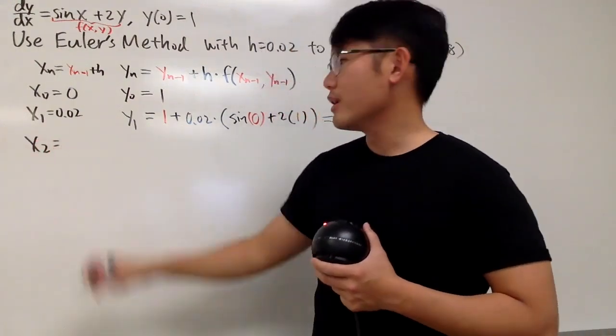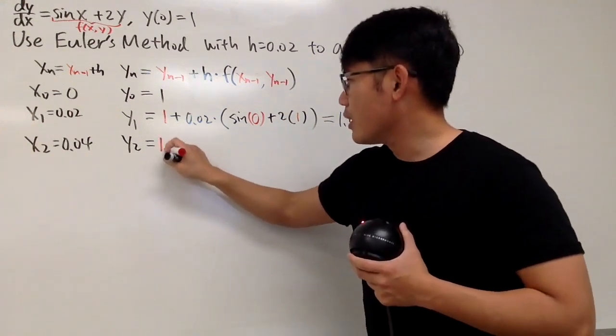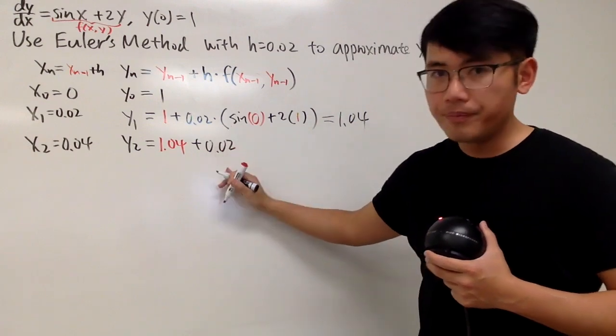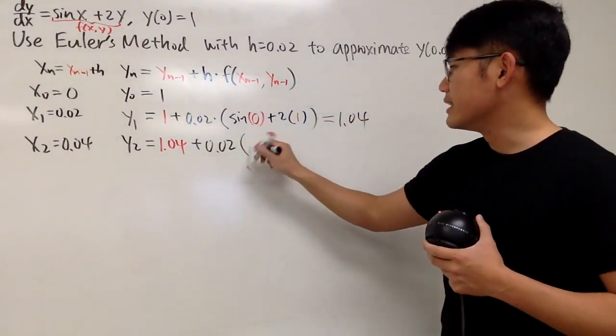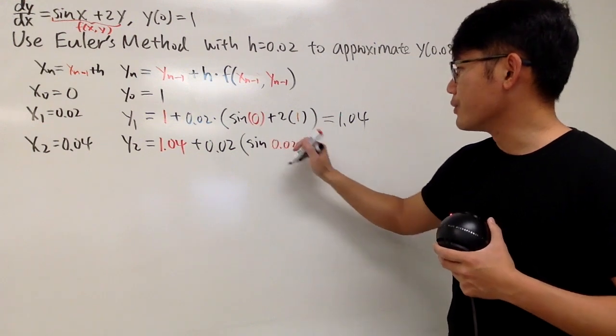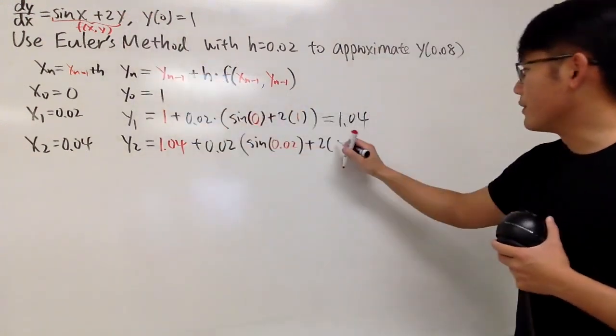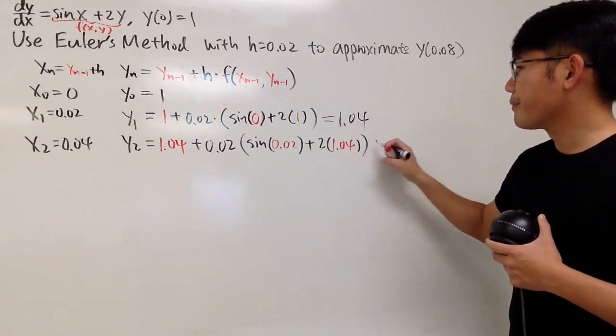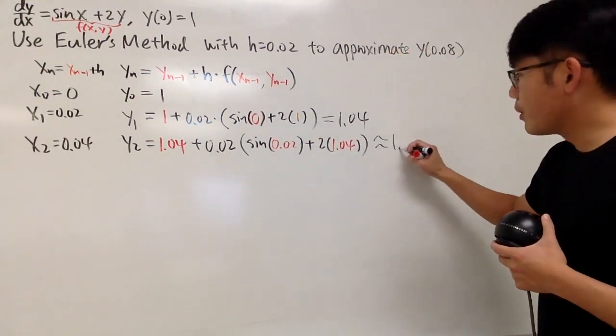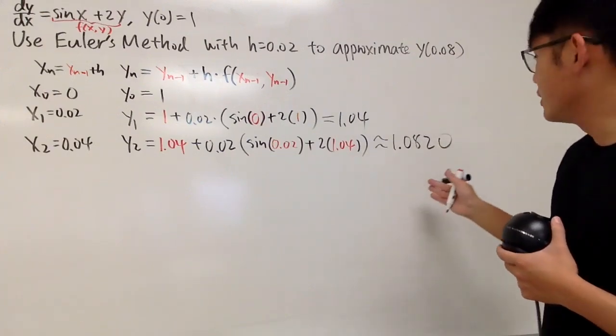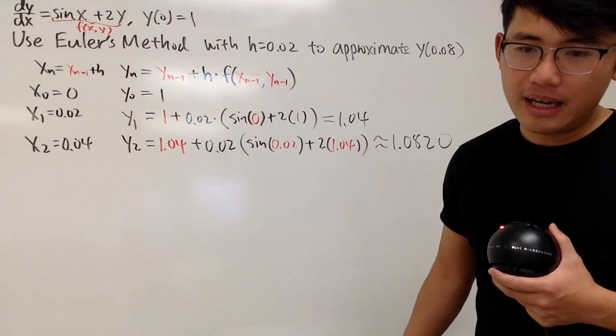Next one, x2, you just keep adding the h, so you get 0.04. And then y2 is going to be the previous y value, which is 1.04, and then we add the h value, which is 0.02. And then we're putting this into the f, which is x and y. So we get sine of 0.02, and then we add 2 times 1.04. And now, if you do that, you will end up with 1.0820. So I'm just doing this up to the fourth decimal place. And then I will just continue.